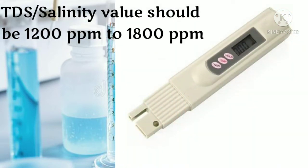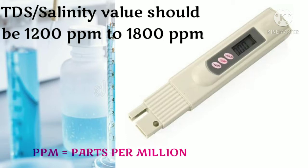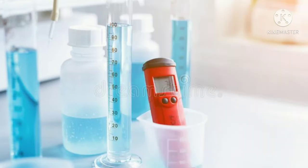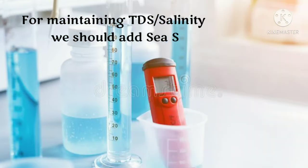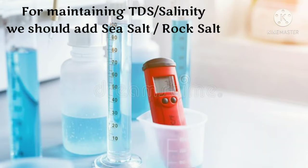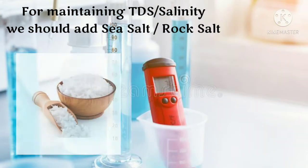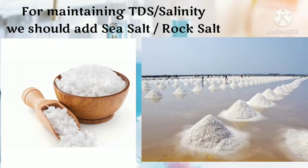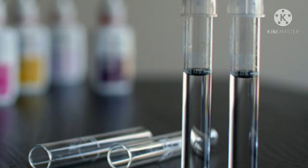The next one is TDS, which is also known as salinity. It should be maintained at 1200 ppm to 1800 ppm. PPM — I'm going to display it on the screen, you can just check on the screen. For maintaining TDS, we should add sea salt.